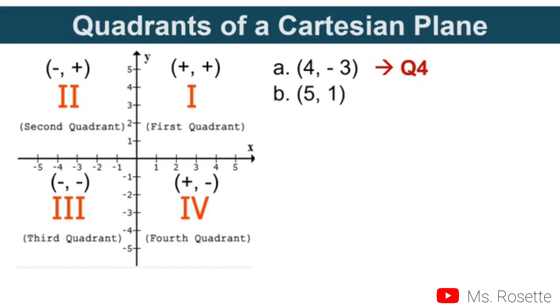Another example: (5, 1). The value of x is positive and the value of y is positive. They are both positive, therefore they belong to quadrant 1. Third one: (-1, -2). They are both negative, so they belong to quadrant 3.